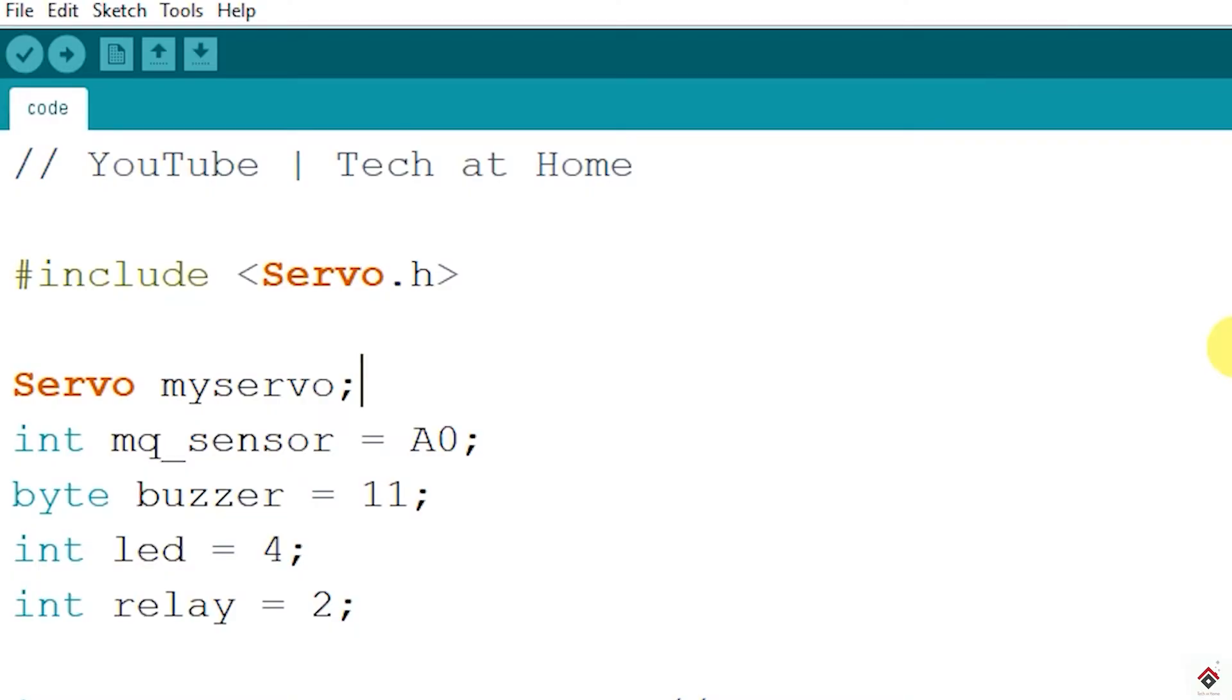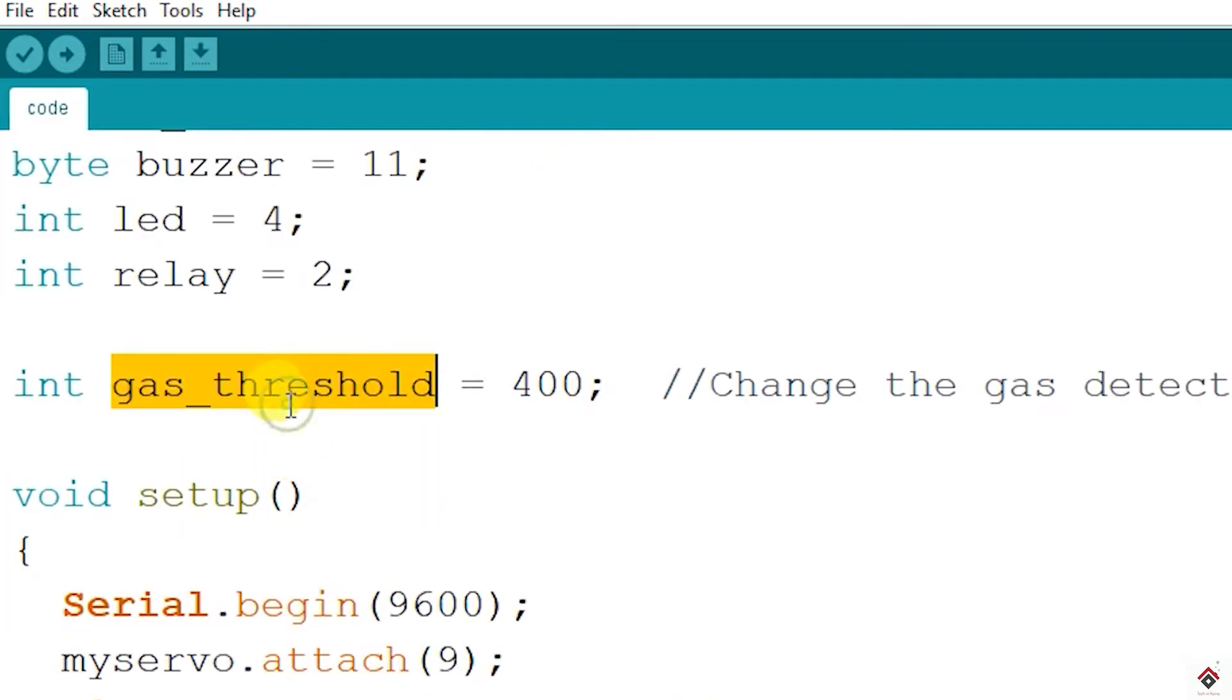Moving on to the code, first we have the declaration of all the components used. Only the gas sensor is connected to analog pin and rest are connected to digital pins. Also, I have declared one variable called gas threshold. Default value I have kept it as 400. This is the value from the sensor which indicates there is a gas leakage. This you have to update it later based on your sensor.